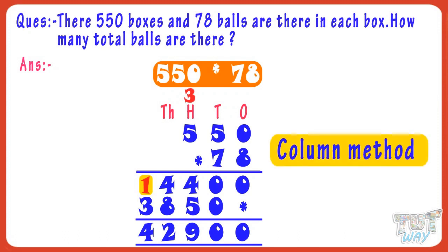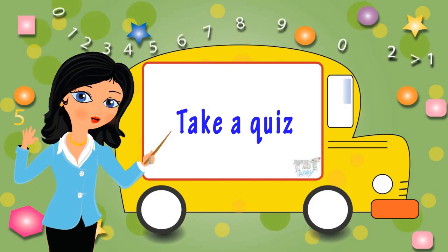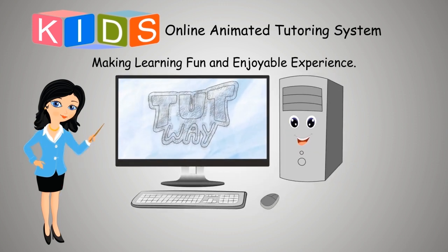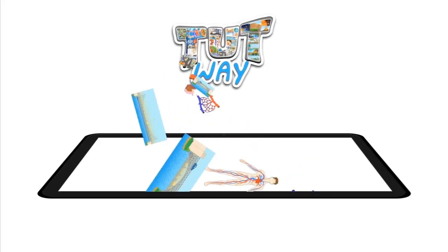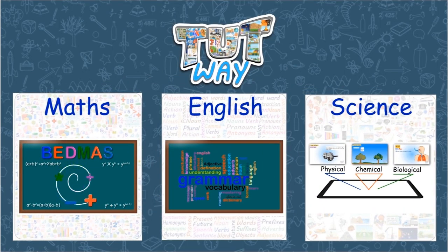So kids, we learned the column method of multiplication to multiply a number with a 2-digit number, where we first multiply with the ones digit, then with the tens digit, and then add both products to get the answer. You need to do a lot of practice to be good at multiplication. 2TootWay has thousands of animated videos on math, English, and science to help clear the core basics of these subjects. Thanks.